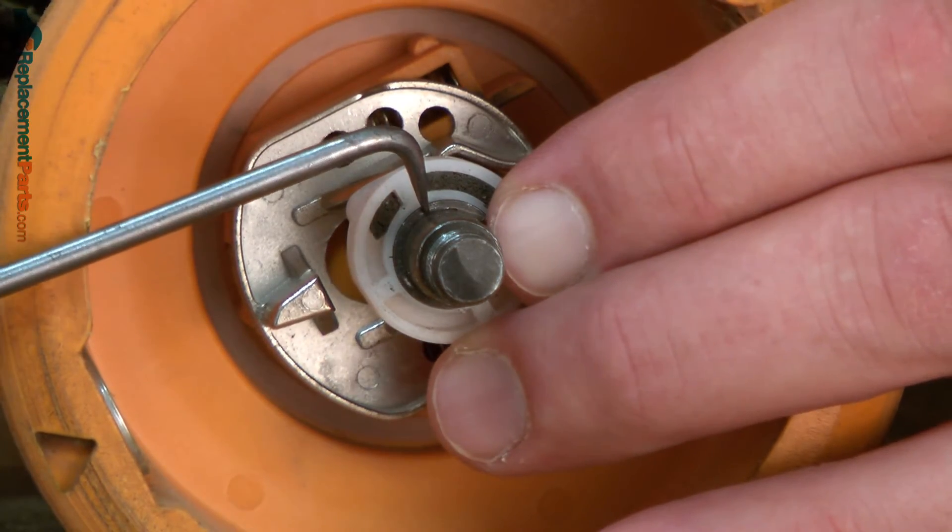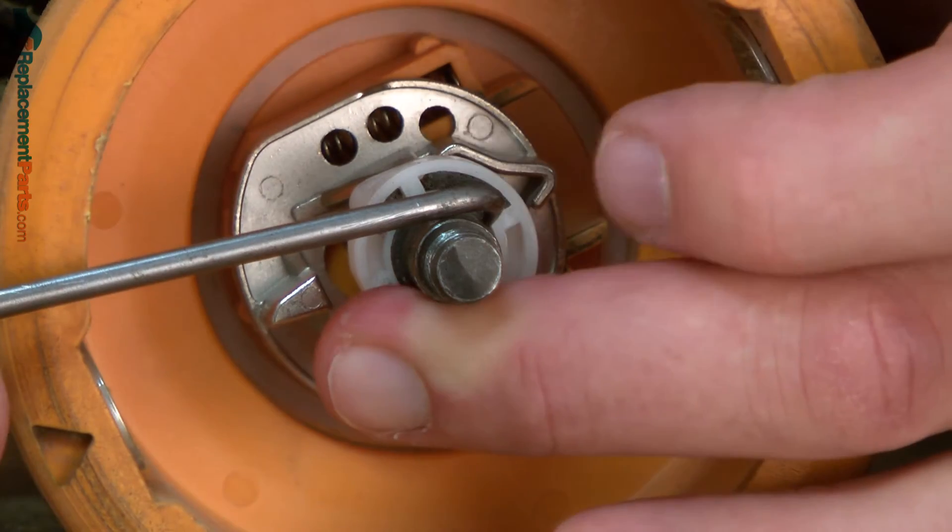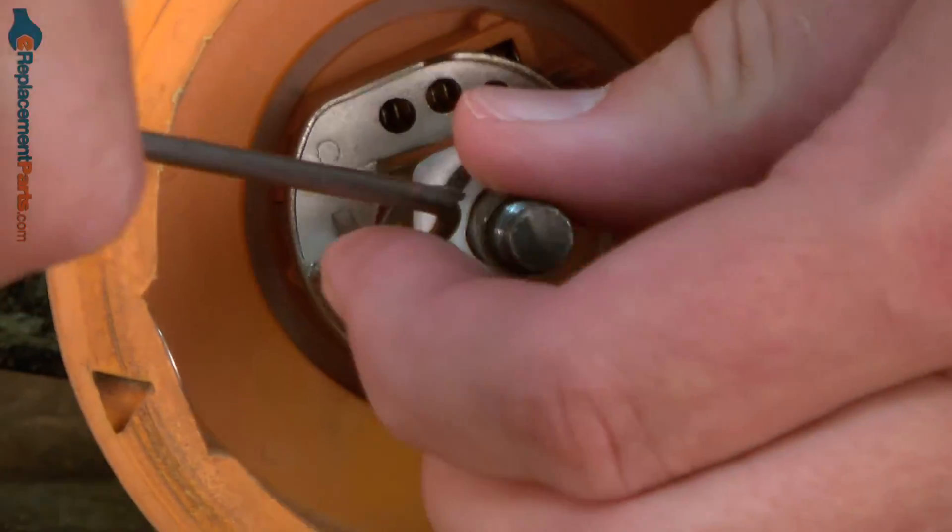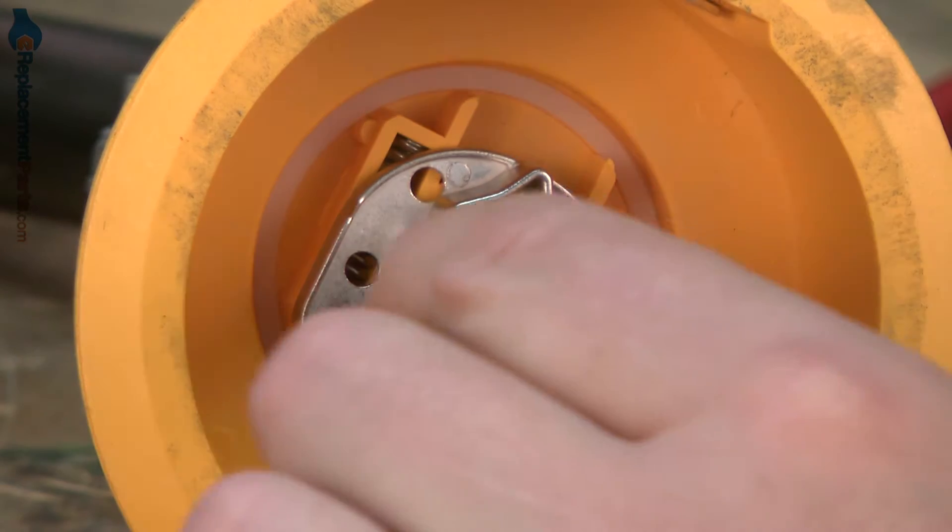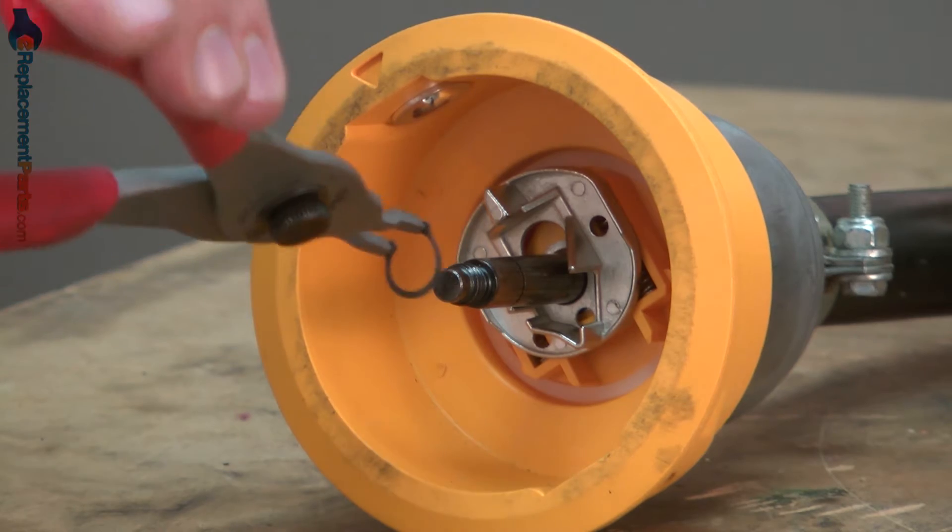I'll use a small pick to pull the C-clip away from the shaft. Now I'll remove the plunger and the plunger spring. Now I'll remove the E-clip and the slider. I'll use a pair of split ring pliers to do that.